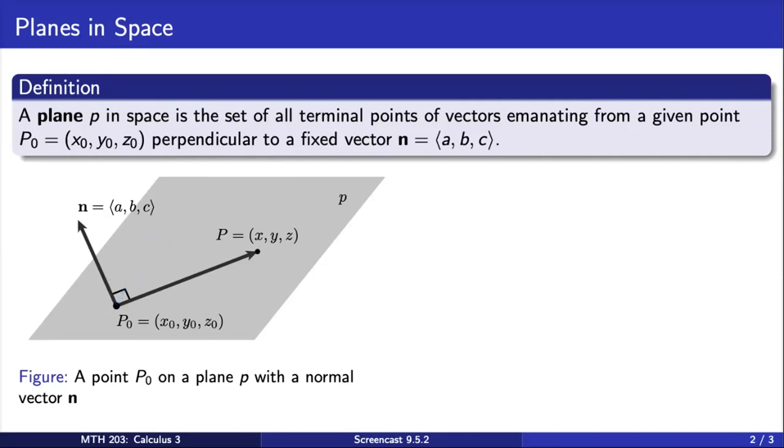This picture is helpful to visualize what's happening, but what does the equation of the plane actually look like? Since N and the vector from P0 to P are perpendicular, we know that the dot product of these two vectors must be zero. This immediately gives us the vector equation of a plane. So this is one way we can describe a plane.